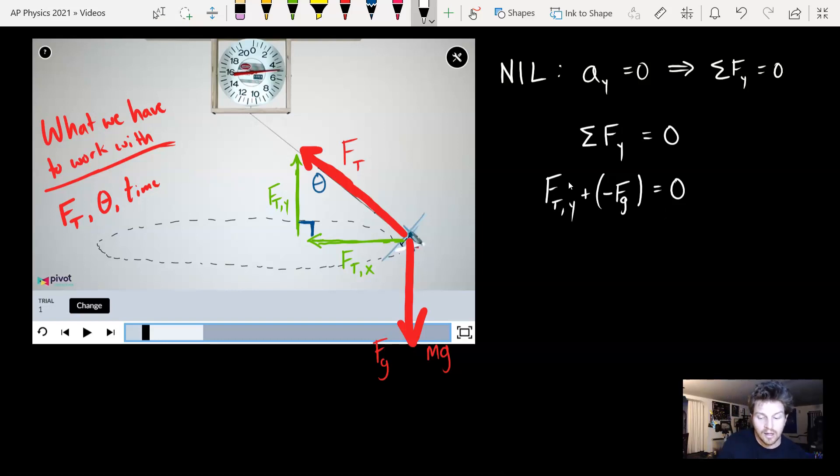Really the only thing we have left to do here is put each of these terms into variables that we actually know. So FT in the y, I can use Sohcahtoa again, and this y component is now adjacent to my angle, so I'm going to use cosine to solve that. So it's going to be FT cosine of theta.